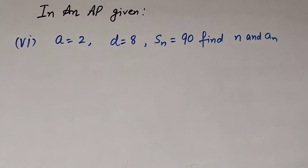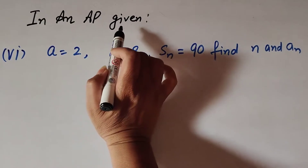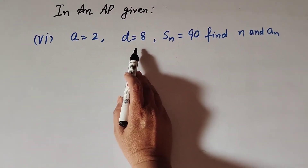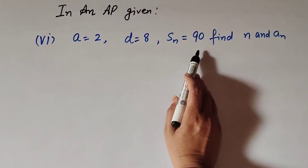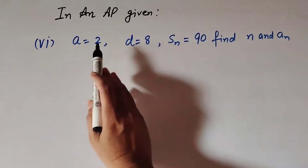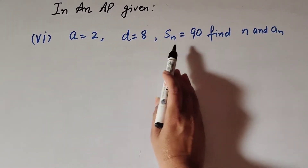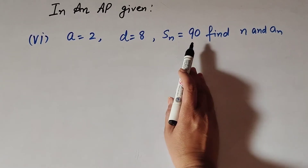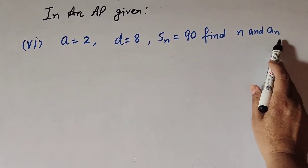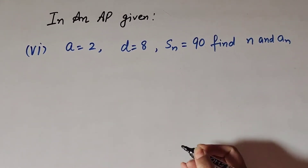Hello friends, welcome to my channel. In this video we discuss an AP problem: given a is equal to 2, d is equal to 8, and Sn equal to 90, find n and an. The first term a is equal to 2, common difference d is equal to 8, sum of n number of terms is 90. We need to find n, the total number of terms, and an, the last term of the AP.